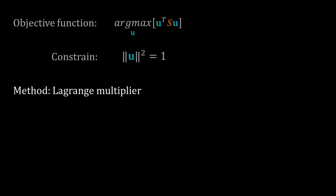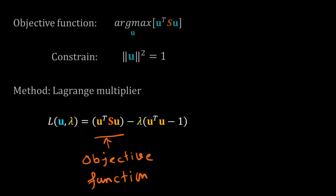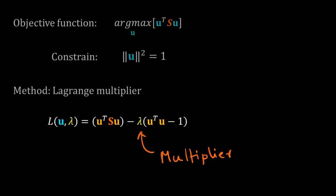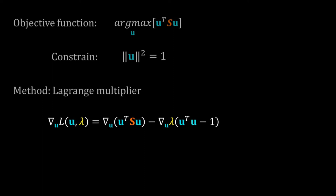First I have to write the Lagrangian function using the objective function and the constraint. The Lagrangian L(u, λ) equals u transpose S u minus λ times (u transpose u minus 1). The first component is the objective function; the second is the constraint in expanded form, where λ is an unknown multiplier. Now I will differentiate both sides with respect to u — since u is a vector, this is differentiation in multivariate calculus. So grad of L equals grad of (u transpose S u) minus grad of λ(u transpose u minus 1), set equal to zero.